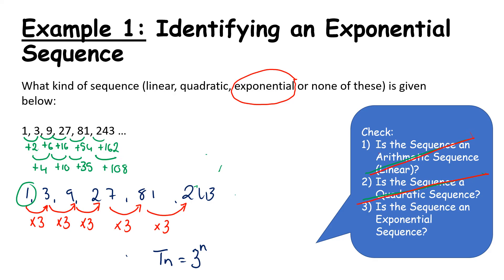So what I would have to do in this case is talk about this as 3 to the power of n minus 1, which would mean my first term is 3 to the power of 1 minus 1, which is 3 to the power of 0.